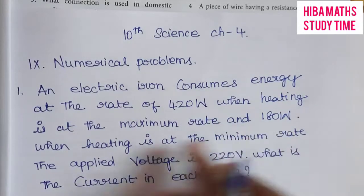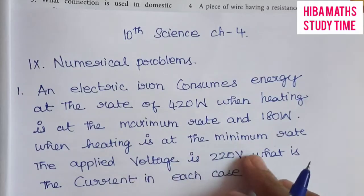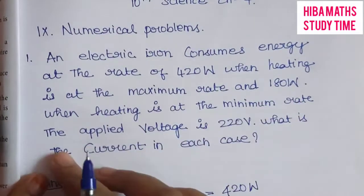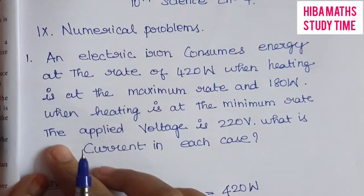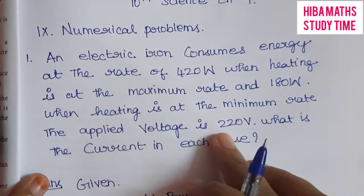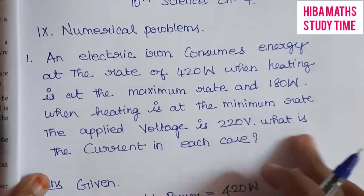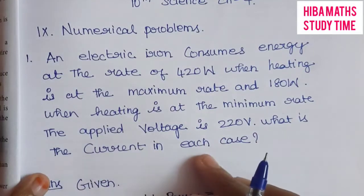And 180 watts when heating is at minimum rate. The applied voltage is 220 volts. This is constant. What is the current in each case?